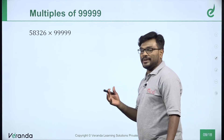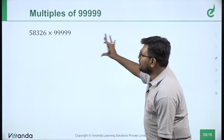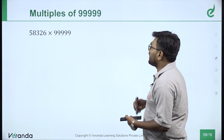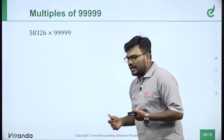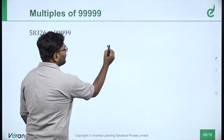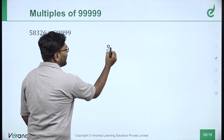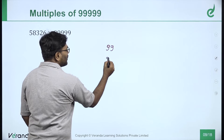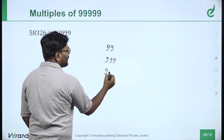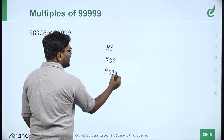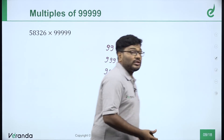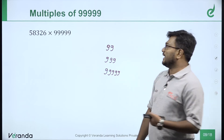That was Type 1 multiplication using 11. Now for Type 2, we look at multiples of double 9, triple 9, and any number of 9s. We will use 3 methods: double 9 multiplication, triple 9 multiplication, and multiplication with any number of 9s.